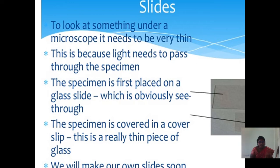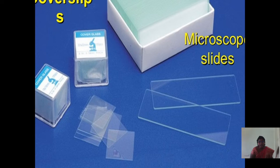The specimen is first placed on a glass slide which is obviously seen through. The specimen is then covered with a coverslip, which is a really thin piece of glass. We will make our own slides. This is the coverslip and this is the microscope slide.